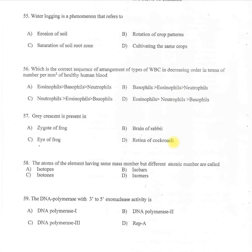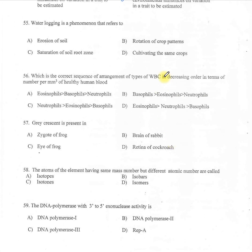Question 55: Water logging is a phenomenon that refers to — A: erosion of soil, B: rotation of crop patterns, C: saturation of soil root zone, D: cultivating the same crops. Option C is correct — saturation of soil root zone.